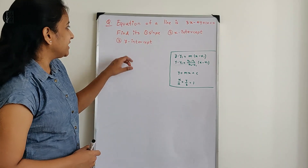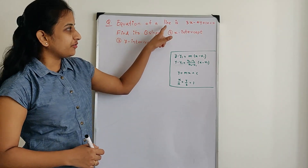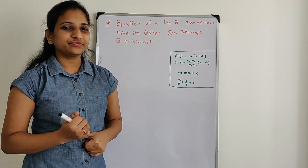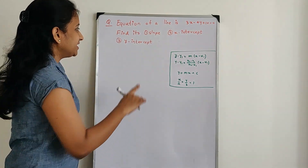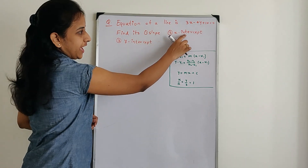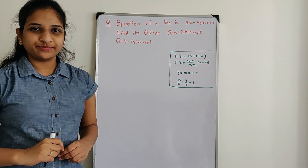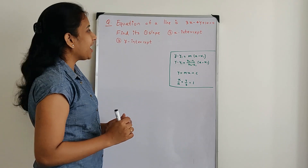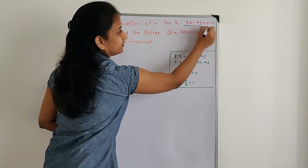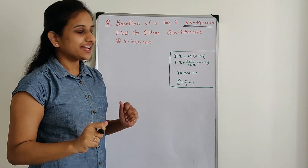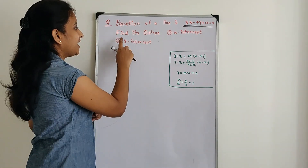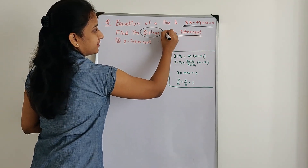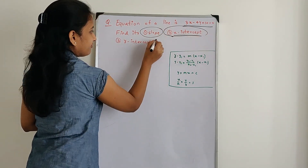The question is: the equation of a line is 3x minus 4y plus 10 equal to 0. Find its slope, x-intercept, and y-intercept. The equation of the line is already given, and we need to find the slope, x-intercept, and y-intercept.